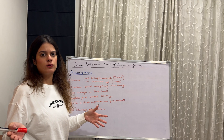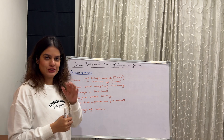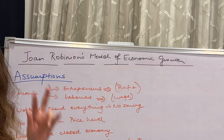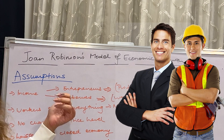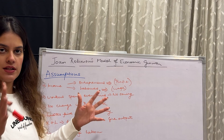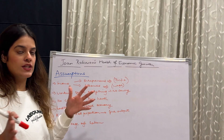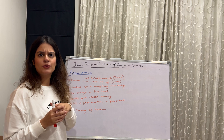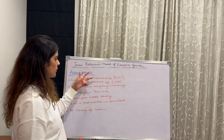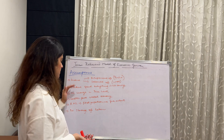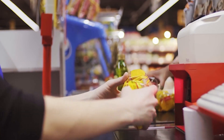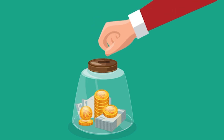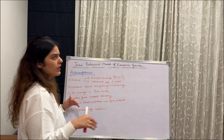Moving ahead to the assumptions, without which no economic model is complete. Income is distributed between two groups: entrepreneurs and laborers. Laborers always get wages and entrepreneurs get profits — these are the factors of production. Workers spend everything; they don't have any savings. So the entrepreneurs are the ones who save, and they lead to capital accumulation or capital formation.